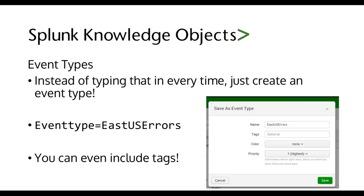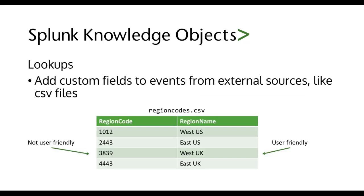Here we've created event type equals East US errors, and event types can even include tags, so event types are very powerful. Lookups add custom fields to events from external sources like CSV files. Suppose your data has region codes and you want Splunk to replace region codes with corresponding region names. You create a regioncodes.csv.